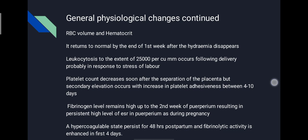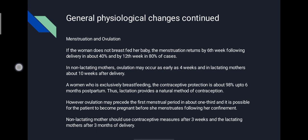Regarding menstruation and ovulation: the onset of the first menstrual period after delivery depends upon lactation. Ovulation and amenorrhea are due to elevated levels of serum prolactin associated with suckling. If the woman does not breastfeed her baby, menstruation returns by the 6th week following delivery in about 40% of cases and by the 12th week in 80% of cases. In non-lactating mothers, ovulation may occur as early as 4 weeks, and in lactating mothers about 10 weeks after delivery. A woman who is exclusively breastfeeding has contraceptive protection of about 98% up to 6 months postpartum, thus lactation provides a natural method of contraception. Non-lactating mothers should use contraceptive measures after 3 weeks and lactating mothers after 3 months of delivery.